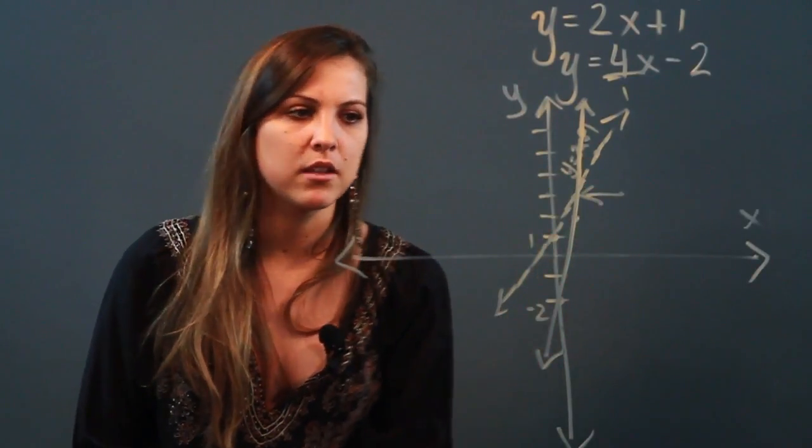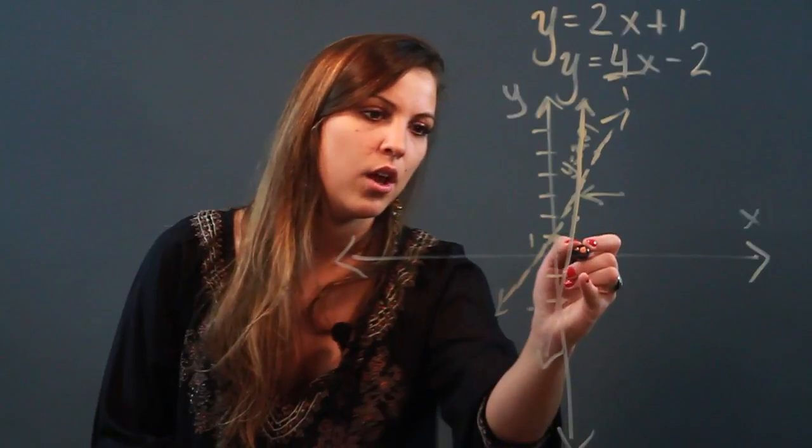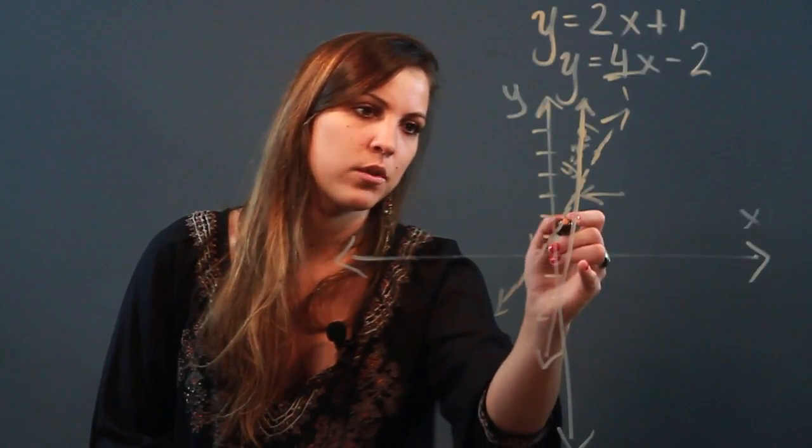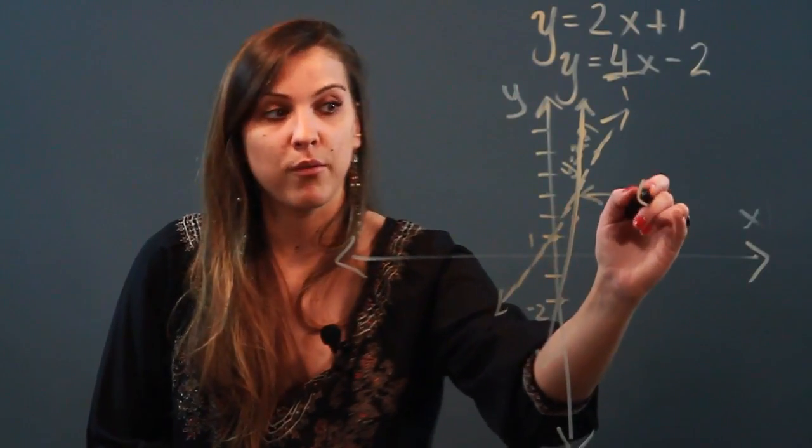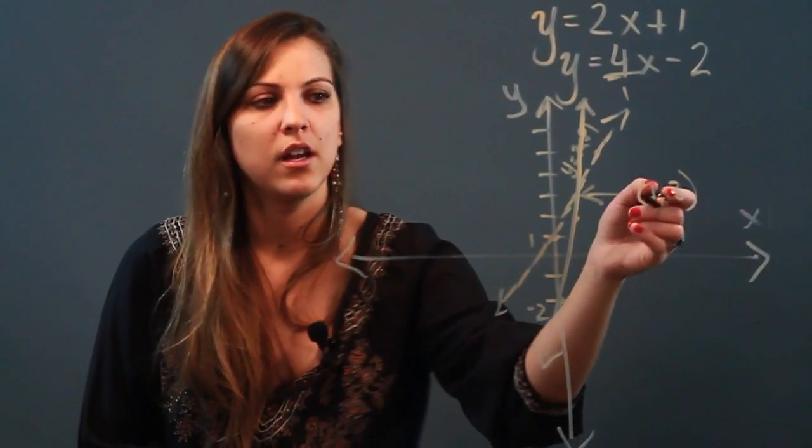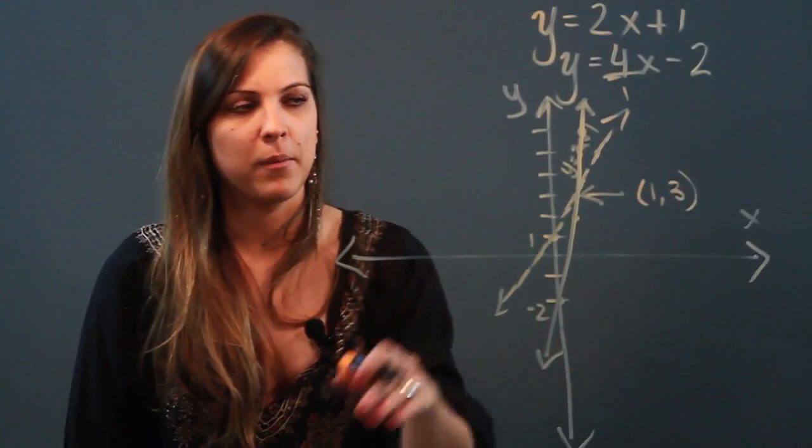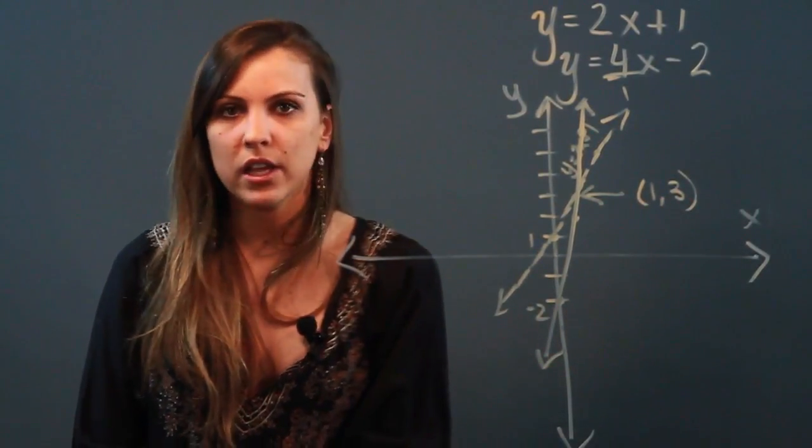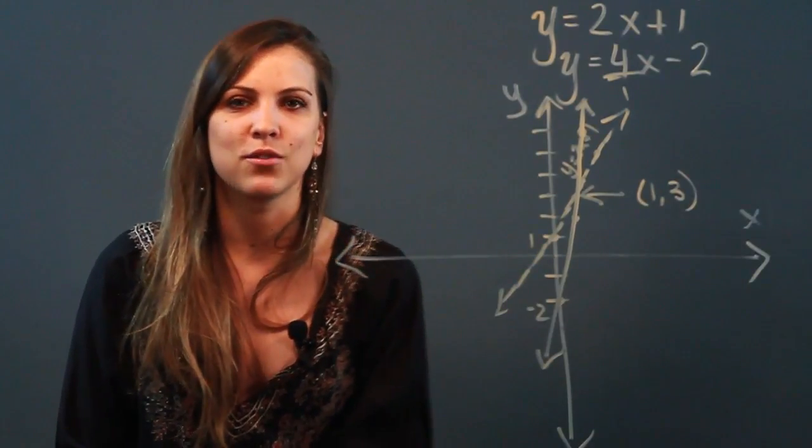And that would be my solution. So this is approximately 1 on the x-axis and 1, 2, 3. So it's going to be somewhere around, but not exactly, 1, 3. But when you have graph paper you'll be able to see it precisely. So graph each line, look for the intersection, and that is your solution to your system.